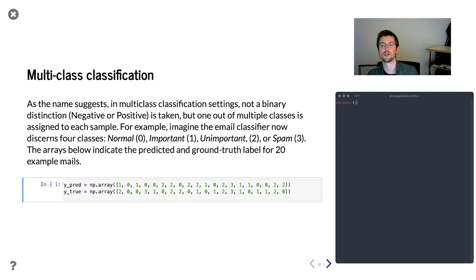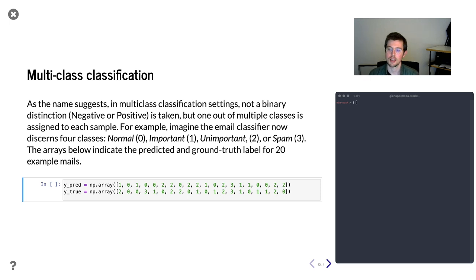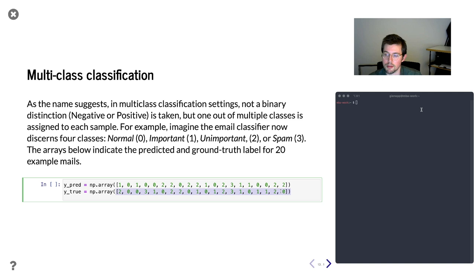The second half covers multi-class classification. Each mail can now receive one of four labels: normal, important, unimportant, or spam. We have 20 example mails, each classified with one of these four classes. For example, the first mail is important, the second is normal, then we have a spam mail and an unimportant one. In some cases the classifier matches the ground truth; in others it greatly misclassifies. The question is how we calculate precision, recall, and F1 score for this multi-class data.